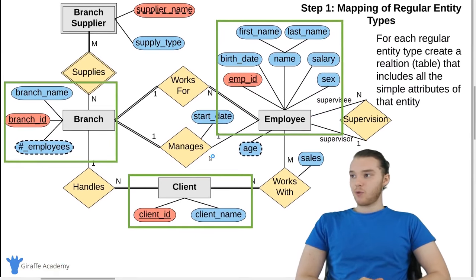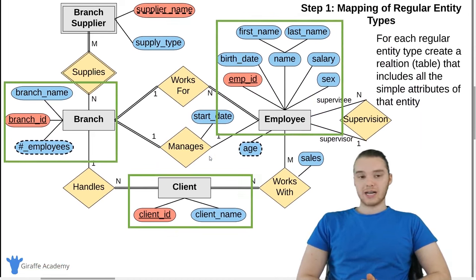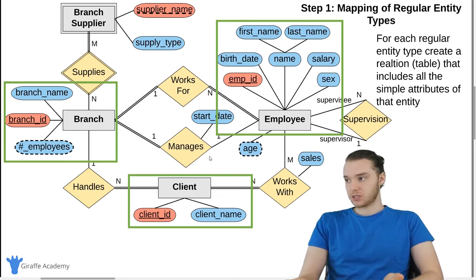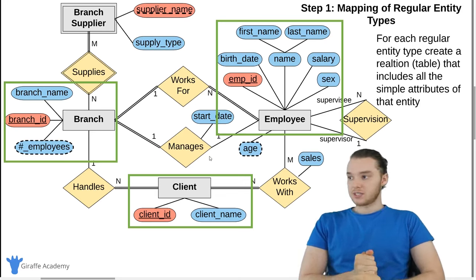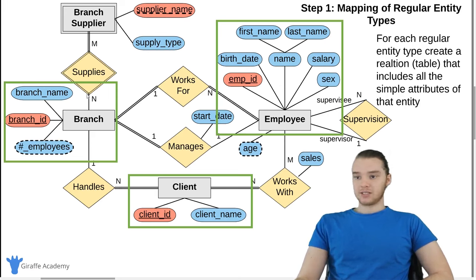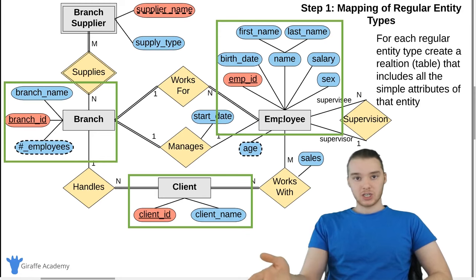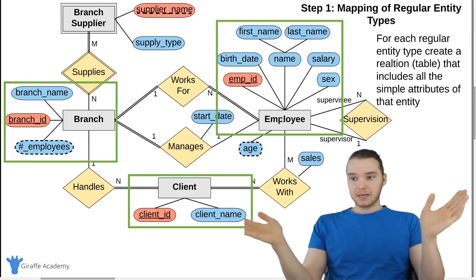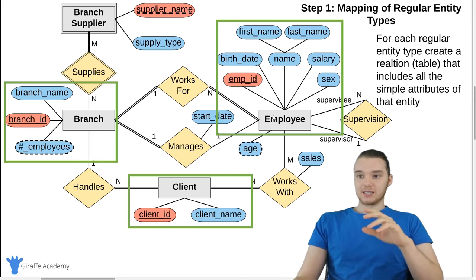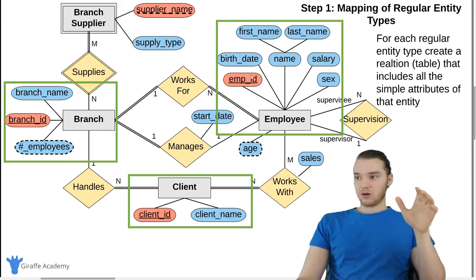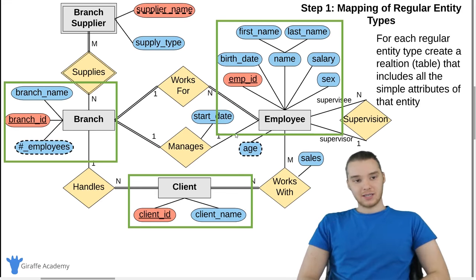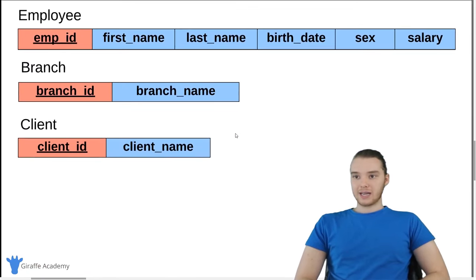Step one is the mapping of regular entity types. For each regular entity type, we want to create a relation, which is just a table that includes all of the simple attributes of that entity. So here we have all of our regular entities — we have branch, client, and employee. What we want to do is create relations, basically database tables, for each one of those regular entities. The columns of those relations are going to be all of the attributes that we defined. So from everything inside the green squares, we're going to get something like this.